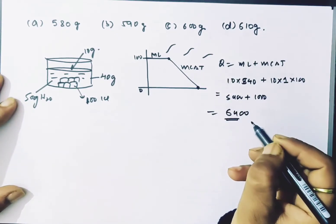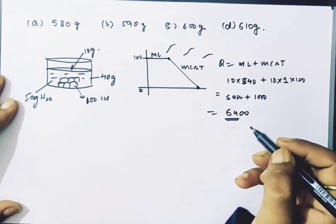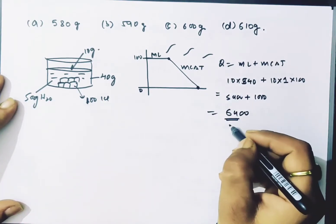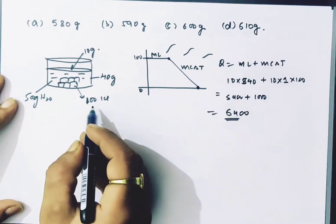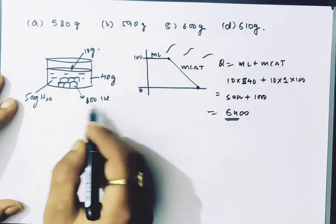So the entire steam has 6400 calories of energy to give. Now let me see if it is enough for the entire ice to melt. For 100 grams of ice to melt...